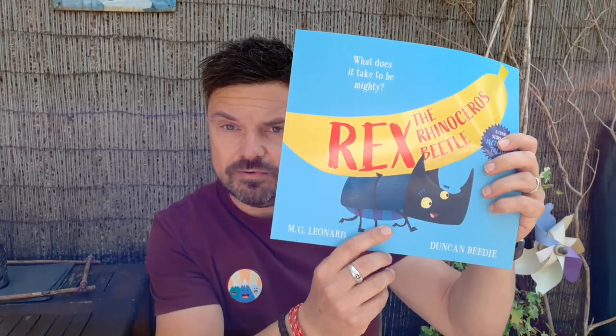Hi there, I'm Duncan and I am the illustrator of this book, the brand new book written by M.G. Leonard, Rex the Rhinoceros Beetle. And today I'd like to show you how to draw the main star of the book, Rex the Beetle right here. So grab yourself your favorite pen or pencil and a nice blank sheet of paper and let's begin.